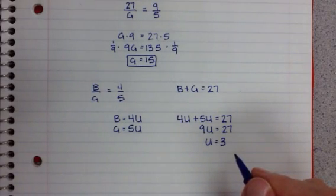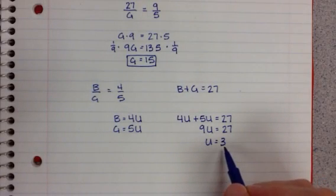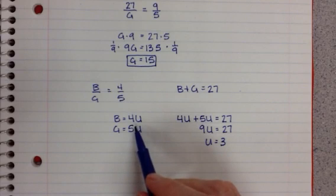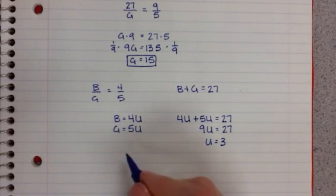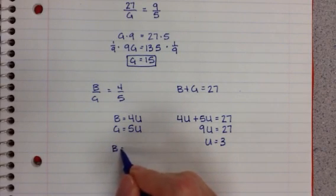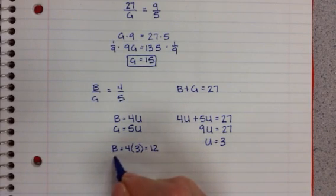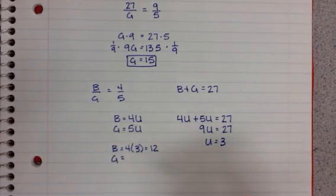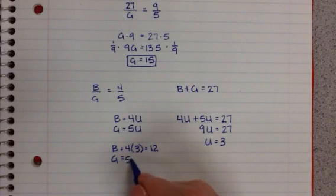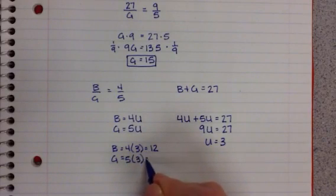So now what we can do is plug this back in. If U is equal to 3, then obviously boys is equal to 4 times 3, which is 12. And G is equal to 5 times 3, which is 15.